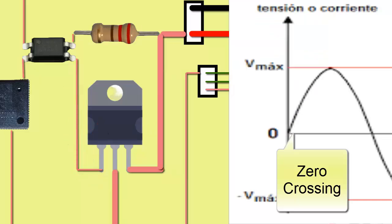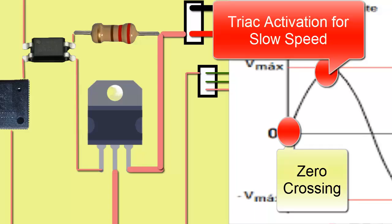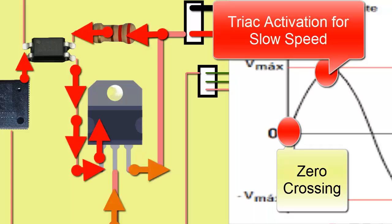In contrast, for low speed, the controller waits for the zero-crossing signal and the current speed signal but delays the triac activation by a few additional milliseconds to slow down the voltage supply and reduce the speed.